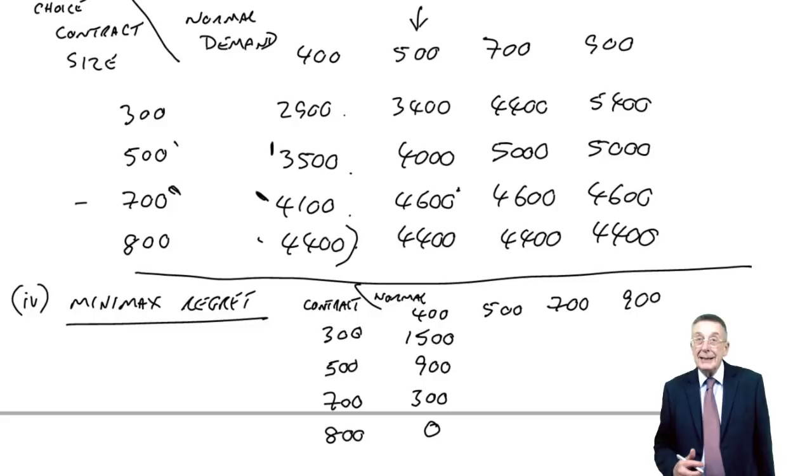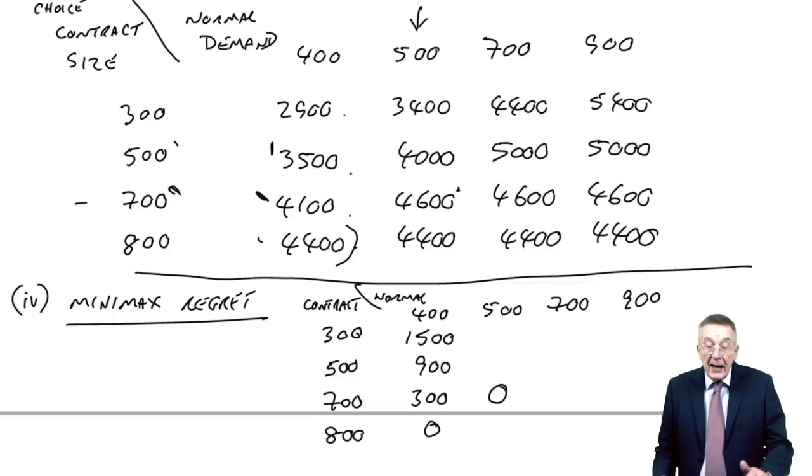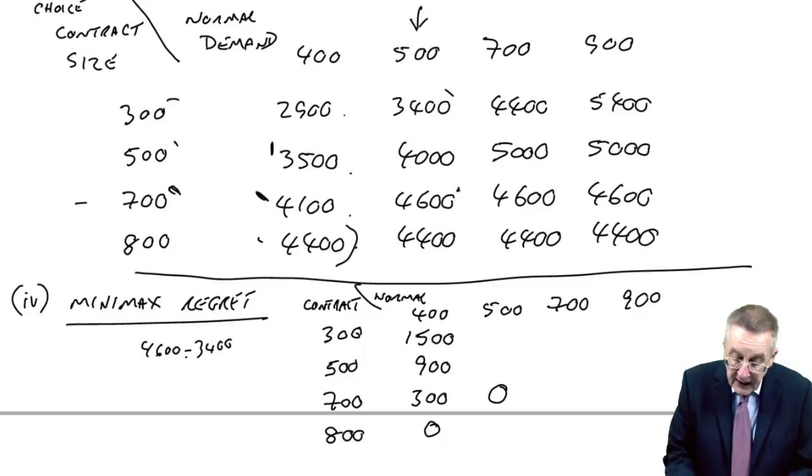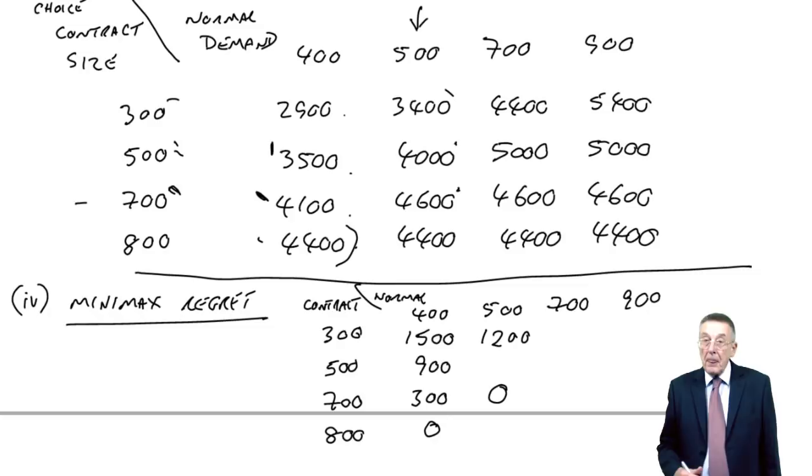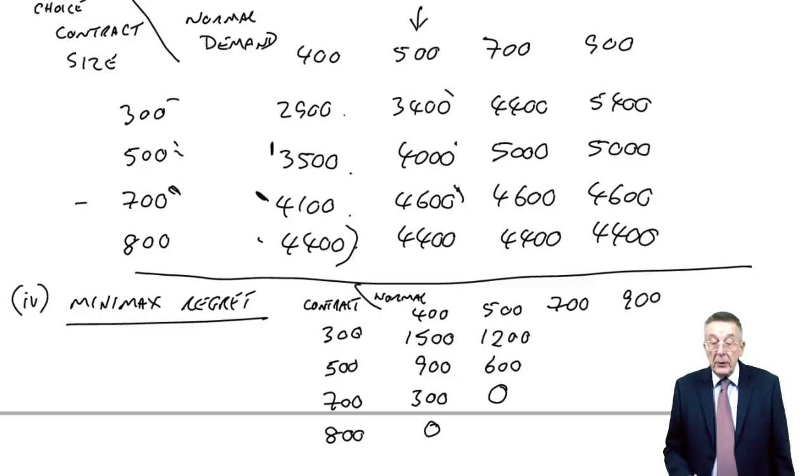But what if we'd chosen one of the others instead? If we'd chosen 300, we'd have only had 3,400. We could have had 4,600. So 4,600 minus 3,400, the difference, it's lost us 1,200. What happens if we'd got the 500? We'd have had 4,000. But we know we could have had 4,600. And so choosing 500 has lost us the difference of 600. And finally, what happens if we'd chosen 800? We'd have ended up with a profit of 4,400. Again, we could have had 4,600, the maximum. We've lost the difference of 200.